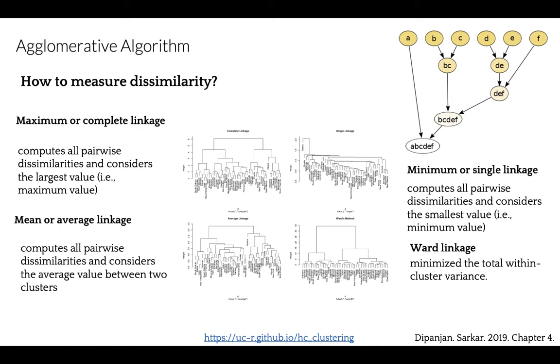Minimum or single linkage clustering computes all pairwise dissimilarities between elements in two documents and considers the smallest of these dissimilarities, the minimum value. It tends to produce long and loose clusters, as you can see in the top right. Mean average linkage clustering computes all pairwise dissimilarities and considers the average of these dissimilarities.